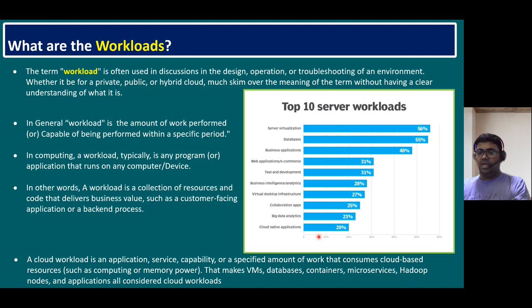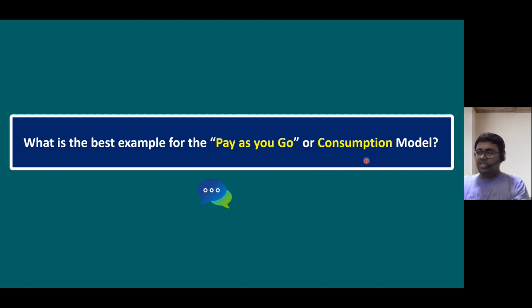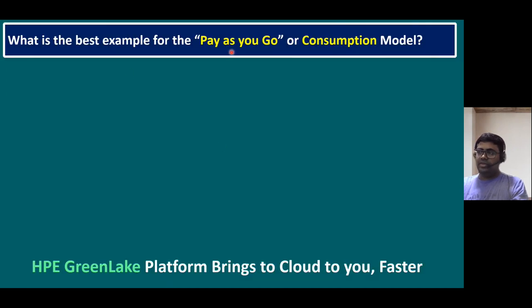Now let's understand the best example for the pay-as-you-go or consumption model. Most public clouds — AWS, Azure, Google Cloud — work in a pay-as-you-go model. Whatever usage you consume, you pay only for that. The consumption model, or subscription model, means you pay based on your usage. HPE GreenLake platform is a great example — it brings the cloud to customers faster.